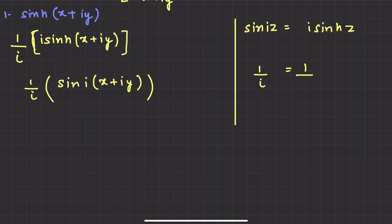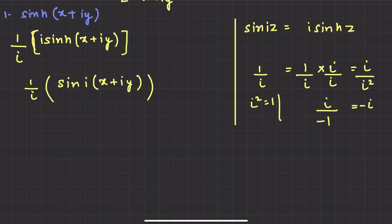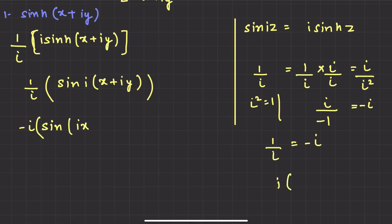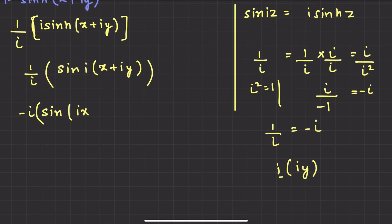This becomes minus iota. Now we have sin with iota on the outside. We multiply iota inside: this gives iota·x, and iota multiplied by iota·y gives iota²·y. The value of iota² is minus 1, so it becomes minus y. Therefore, we have sin(ix − y) with a minus iota out front. Let's simplify this.